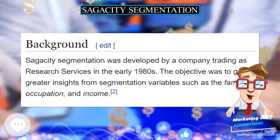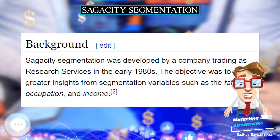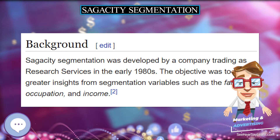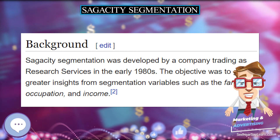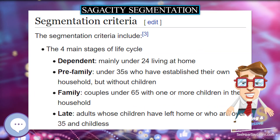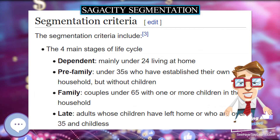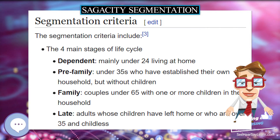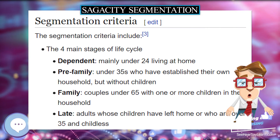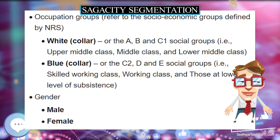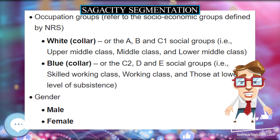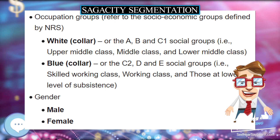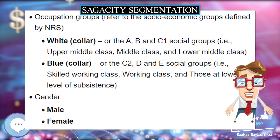Sagacity segmentation is most often used by banks and financial institutions because life stage is perceived to be a major factor in making major financial decisions, such as purchasing a car, house, or life insurance. It is also widely used in media analysis and media planning.